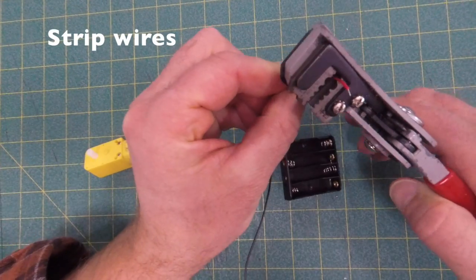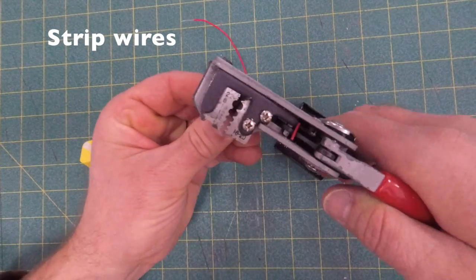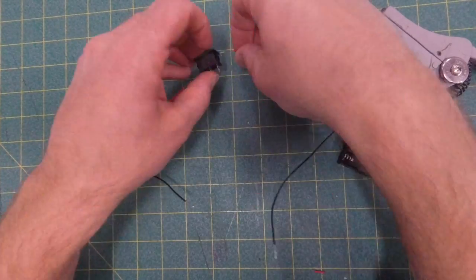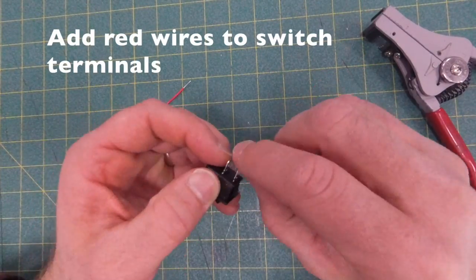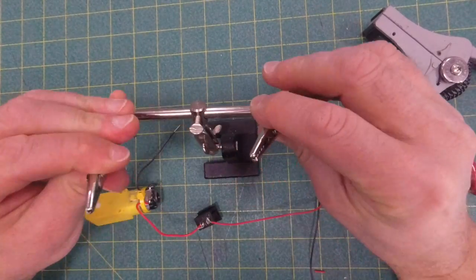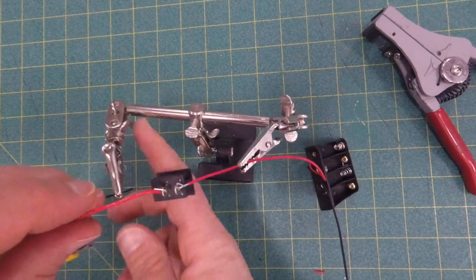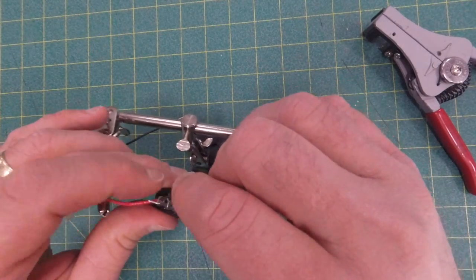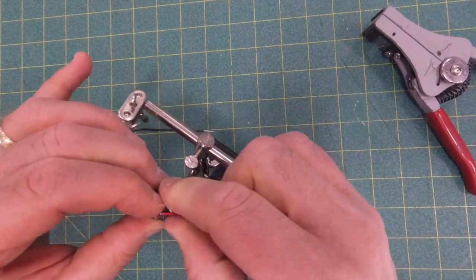We're going to start with the switch. Strip the wires so we have a little bit of a longer wire sticking out. We're going to attach both red wires to the switch terminals and twist those around. When I put them together like this, I can hold them a little bit tighter within the helping hands, and that assists me to solder.